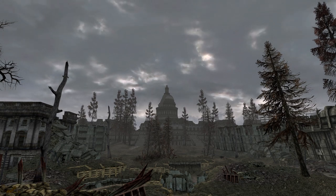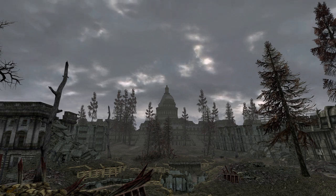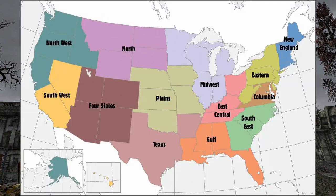We don't have a completely canon description of the commonwealths, however information from Joshua Sawyer does give us a general idea. In this map we can see the breakdown of each commonwealth and its states, with the US being divided among the Colombian, East Central, Eastern, Four States, Gulf, Midwest, New England, North, Northwest, Plains, Southeast, Southwest, and Texas commonwealths.